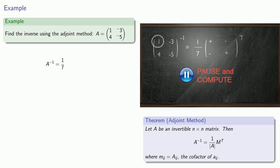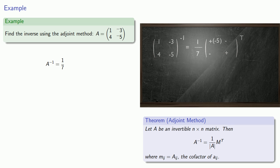For the first row, first column entry, we'll cross out that row and column, and the minor will be the determinant of what's left over, which will just be negative 5.